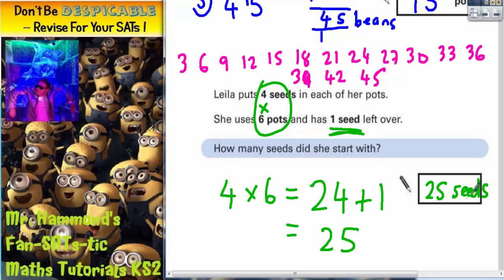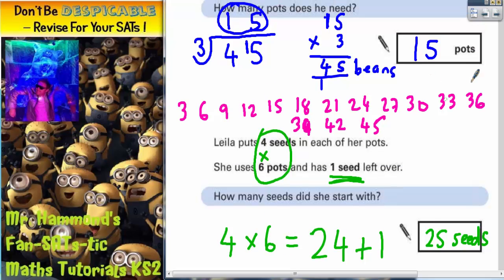Just to double check. If she did start with 25 seeds, could she do 6 pots each with 4? Well, 6 pots each with 4 would have been 24 seeds. And then she would have had 1 left over which she didn't put in a pot. So that would have made 25 seeds. So that is correct. So your 2 answers are 15 pots and 25 seeds.